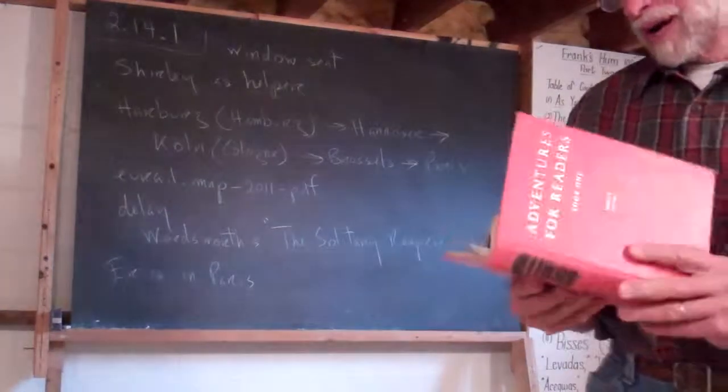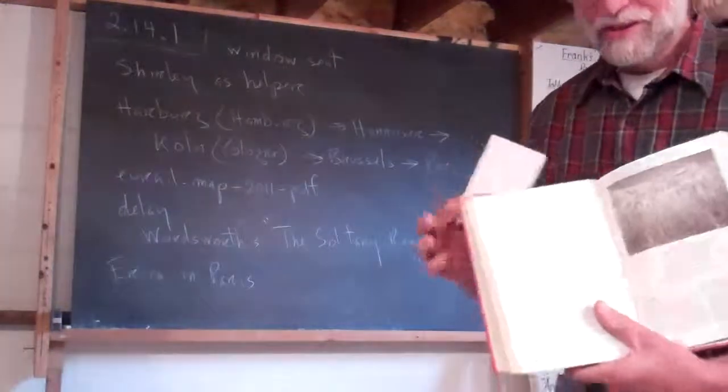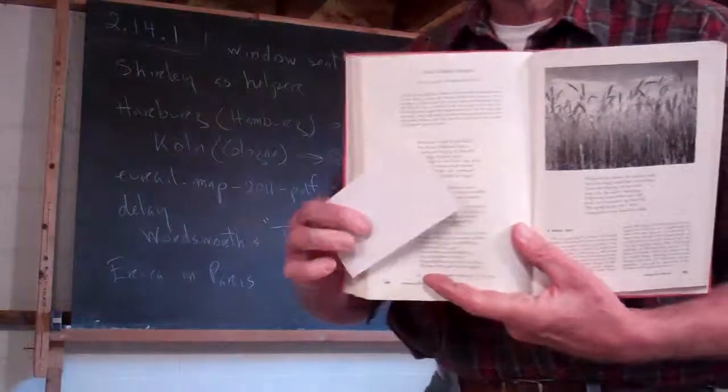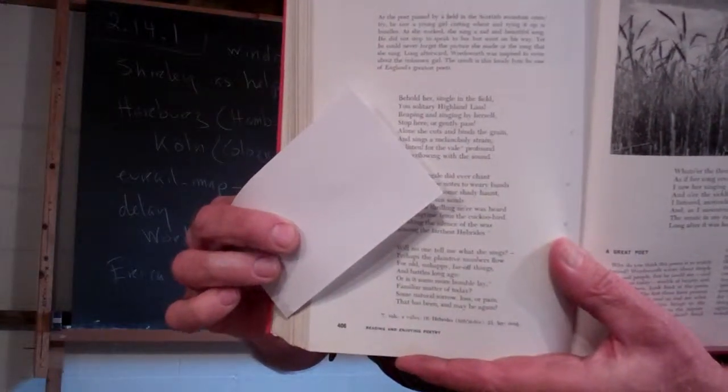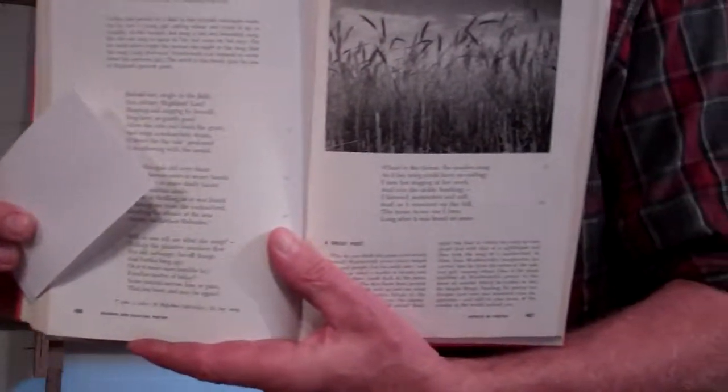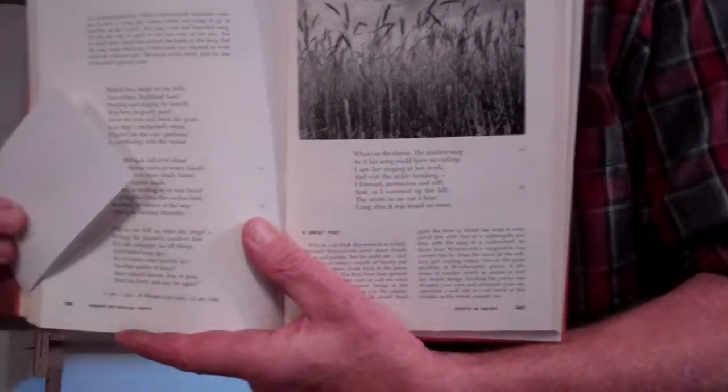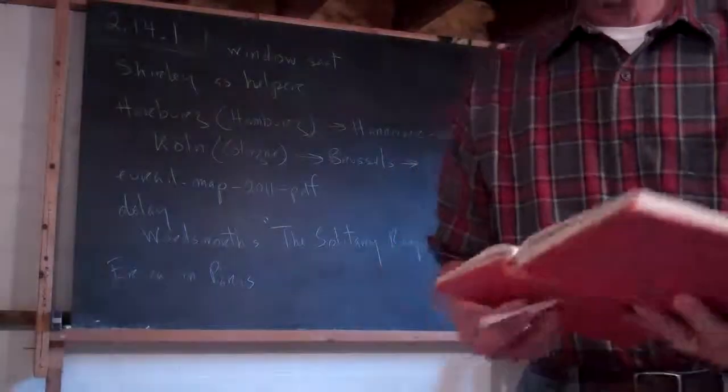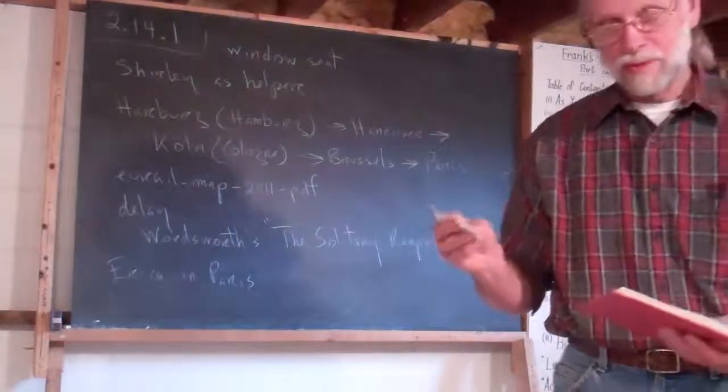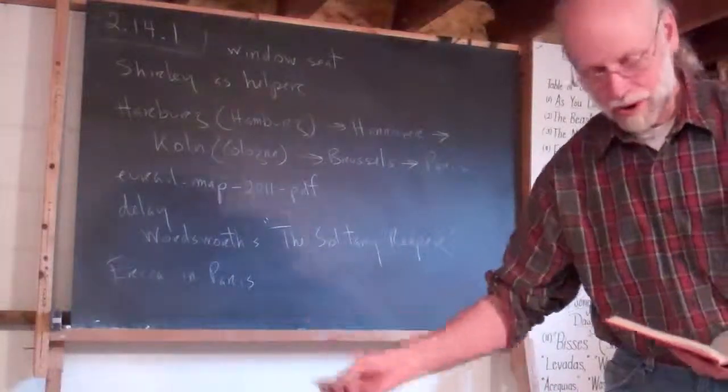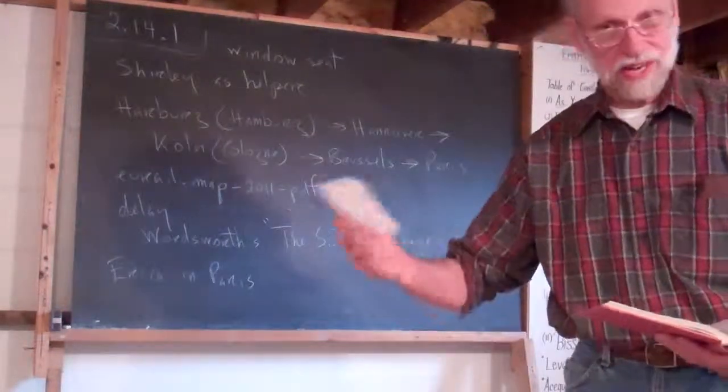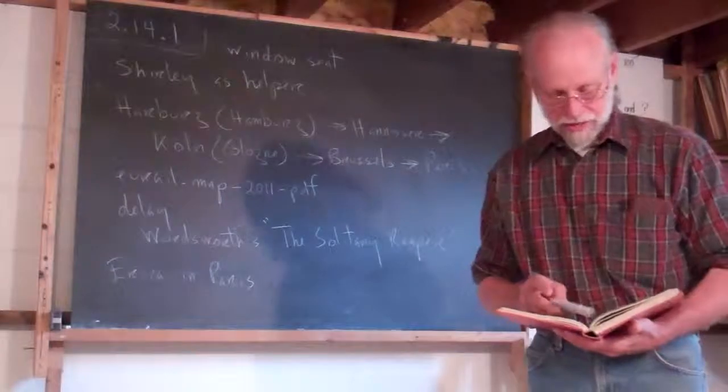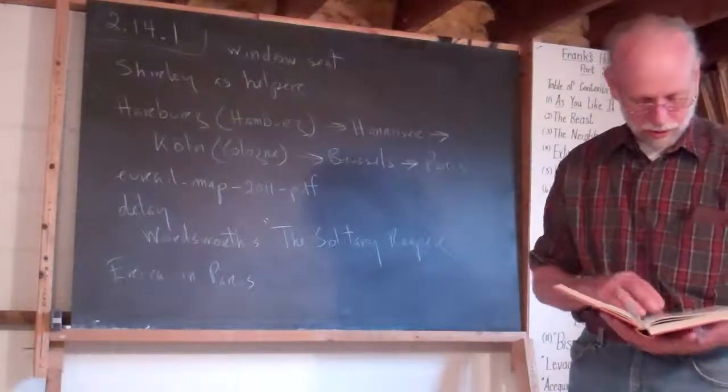The Solitary Reaper. A poem of his, here it is. I don't know if you want to read the whole thing. Possibly you could pause and see the whole thing. I won't read it all to you. But he tells of a time that he was walking, and he came across a woman who was reaping in the field, harvesting. And the whole time that she was harvesting, she was singing. And he didn't understand the language. It was probably Scottish or something.